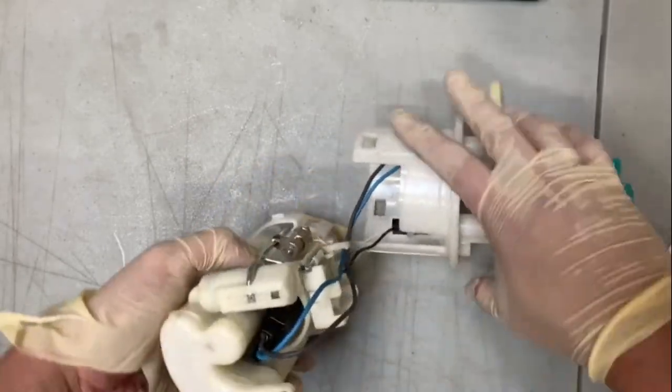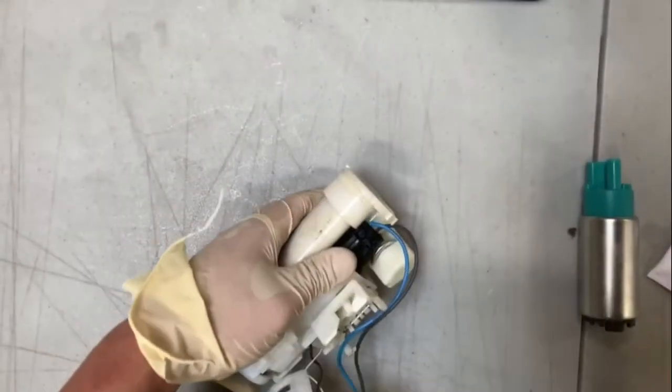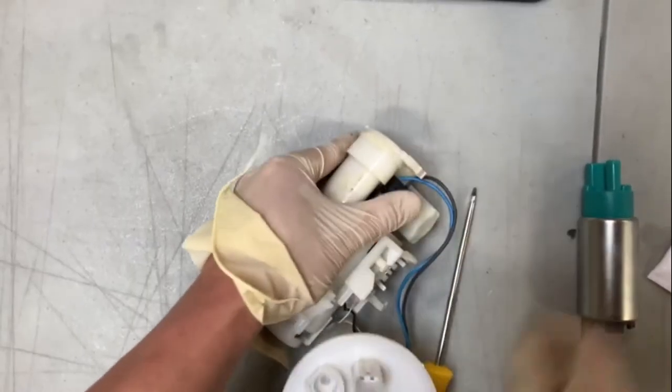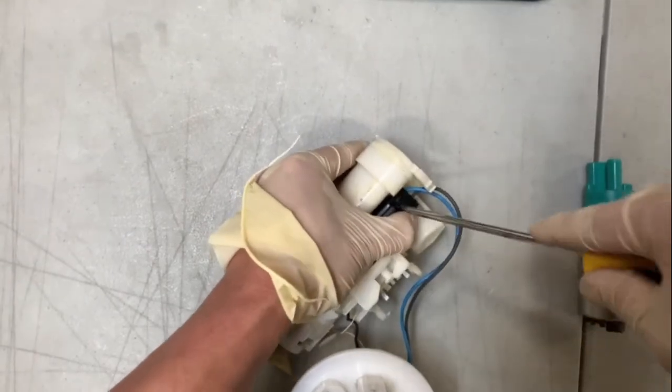You can see the OEM strainer. Be very careful. What you could do is use a screwdriver to remove the harness right here. Just use the screwdriver. It will come right off.